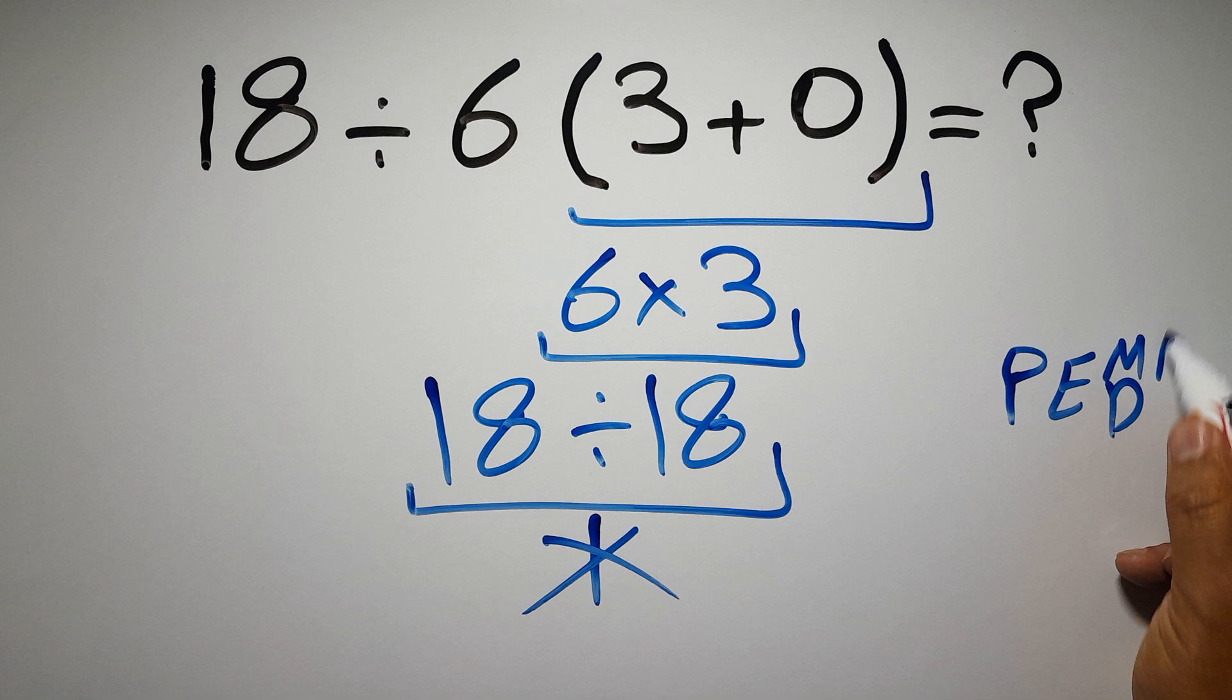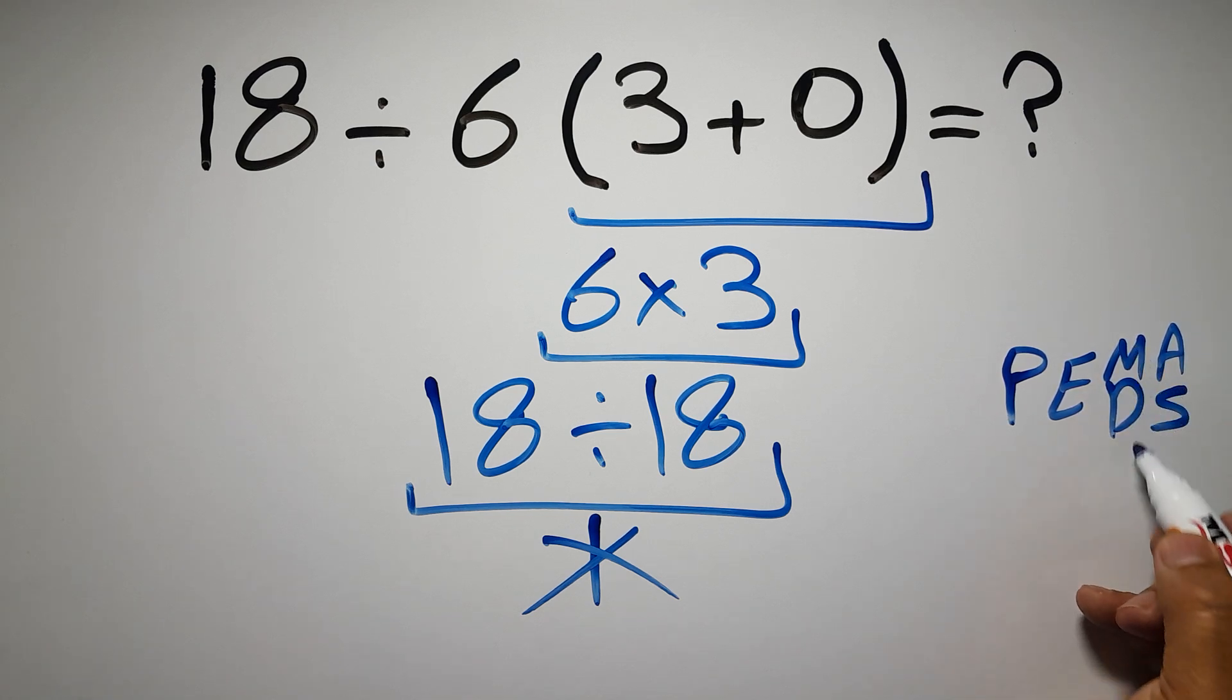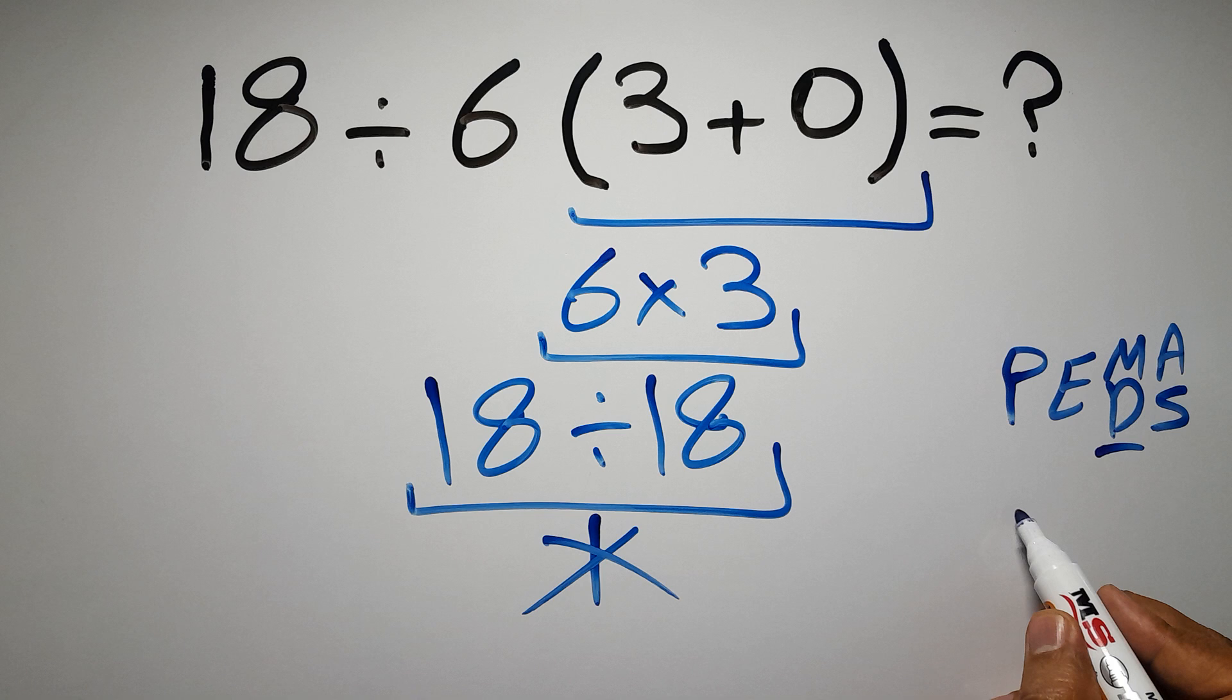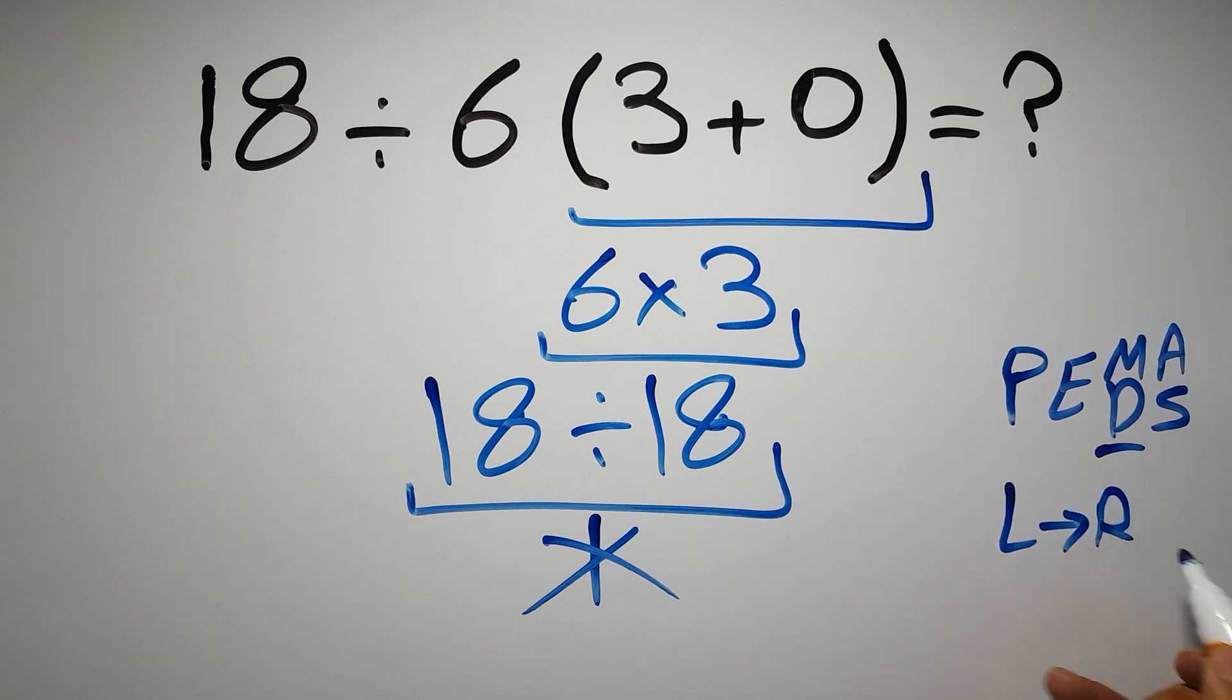And finally addition or subtraction. Remember that multiplication and division have equal priority, and we have to work from left to right, and the same applies to addition and subtraction.